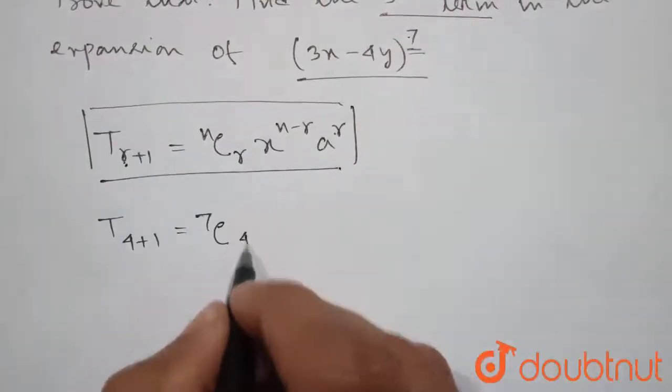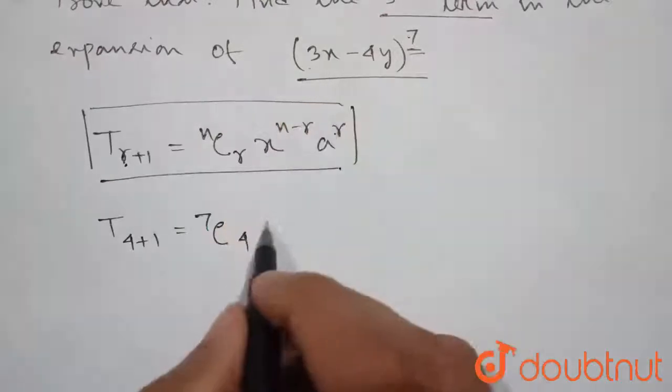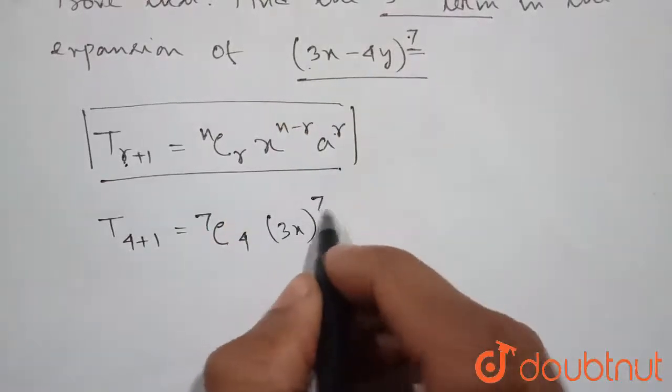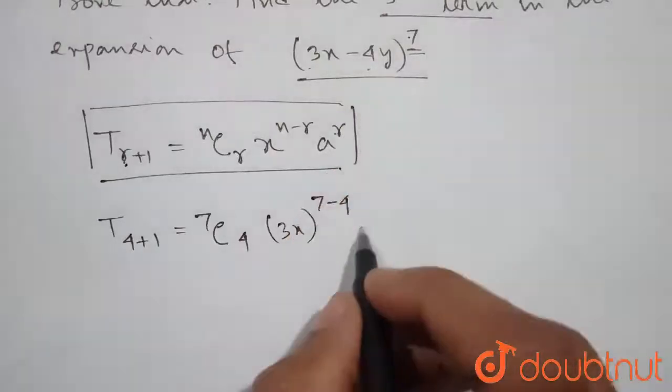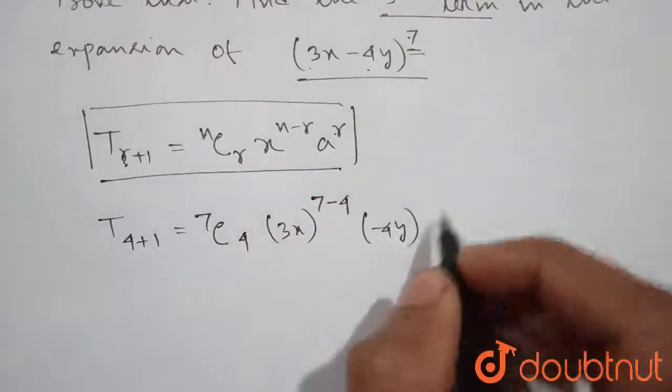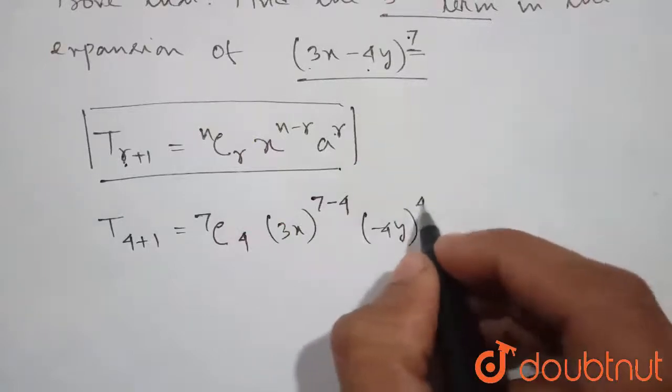7C4 and x is equal to 3x, 3x to the power (7-4), 4 and a is -4y, -4y to the power 4.